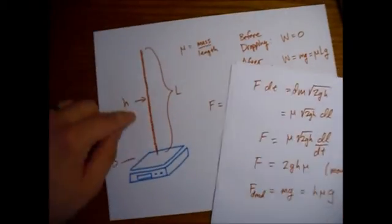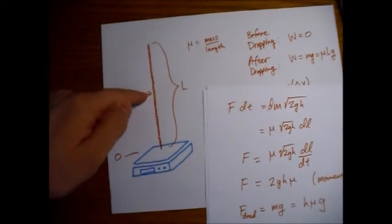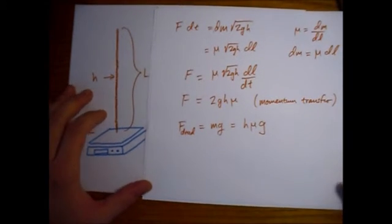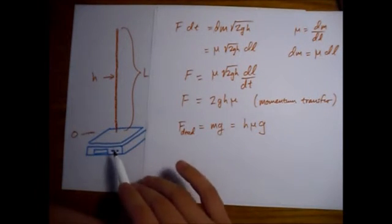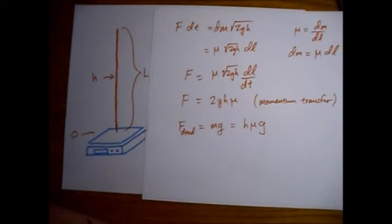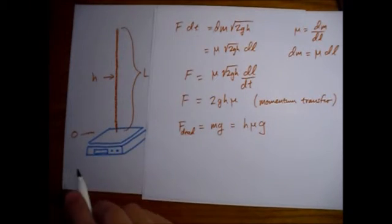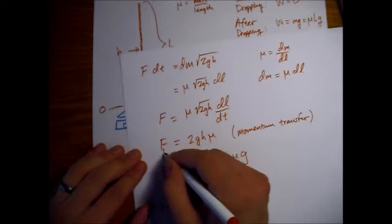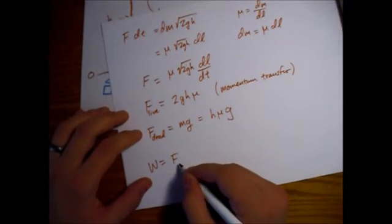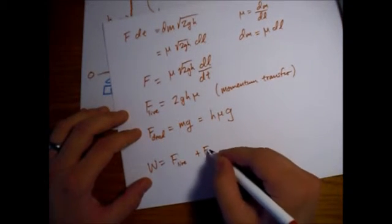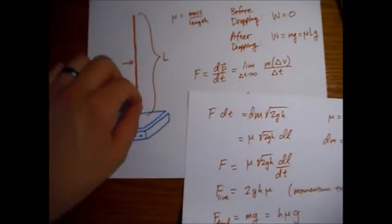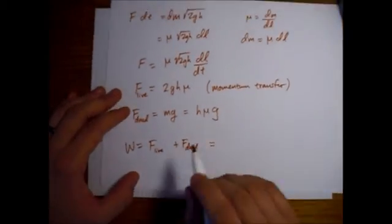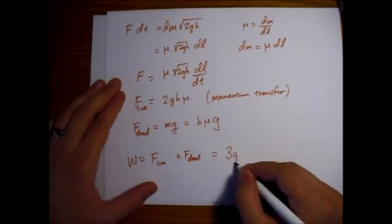So we can just see that at the point when this arbitrary link on the chain, which was a height h above the scale when we started, at the point that that arbitrary link hits the scale, the amount of force on the scale due to the link hitting the scale is actually twice as big as all of the chain that is already sitting there on the scale. So if we now, let's just call w, forgive me for using these. I'll call this one live, why not? So what I mean by live is just the link that is still in motion and the ones that are dead are the ones that are already sitting there. Kind of weird. But yeah, we just add these two together and we just get 3ghμ.